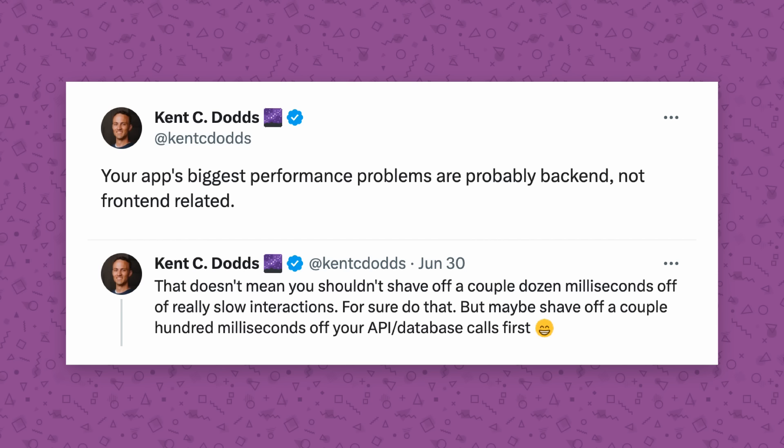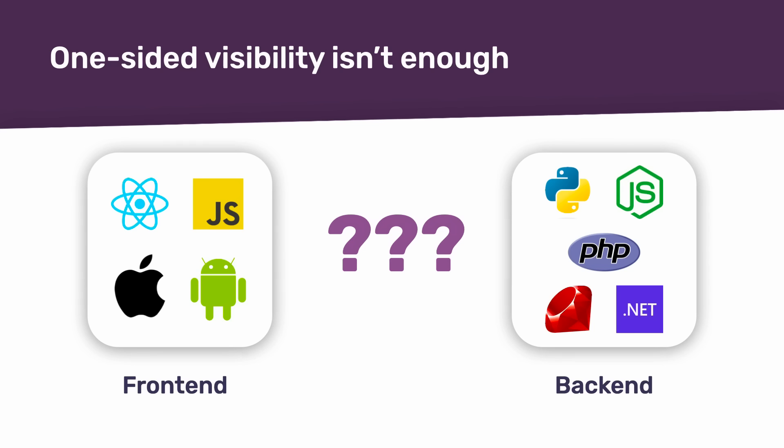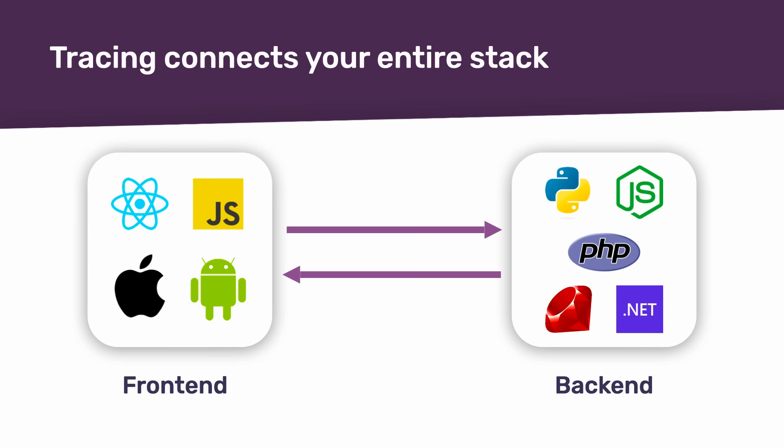Poor front-end performance is most often caused by poor back-end performance, like when an API endpoint has high latency. But in some cases the front-end can be responsible too, like when you have poorly optimized UI code. Most tools are focused on one part of the problem, either the front-end or the back-end. But solving performance problems requires understanding both. Tracing allows us to connect what's happening on your browser or mobile front-end to the back-end code that is responsible for handling the API requests. This visibility across the entire stack is essential to being able to solve performance problems holistically.